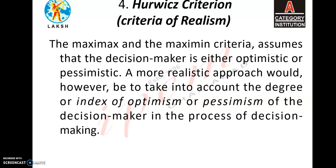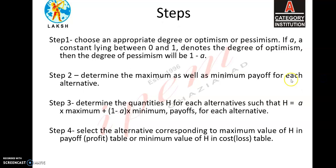In this method there are the following steps. Step number 1: choose an appropriate degree of optimism or pessimism. If A (alpha), a constant lying between 0 and 1, denotes the degree of optimism, then the degree of pessimism will be 1 minus A. Step number 2: determine the maximum as well as minimum payoff for each alternative.